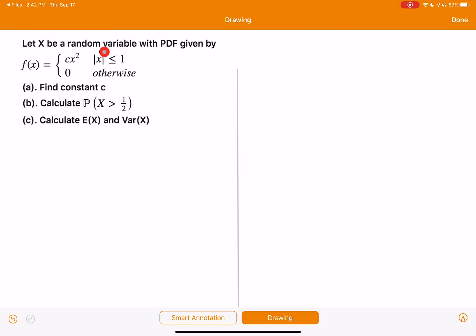Let X be a random variable with a PDF given by this function f. Find a constant c so that f is a density function. Calculate the probability X is greater than one-half and calculate the expected value and variance of X.